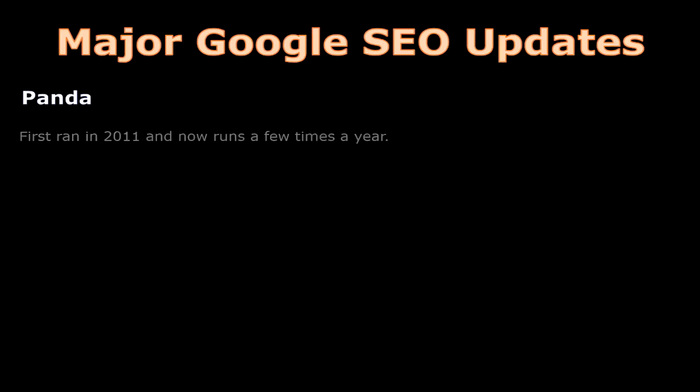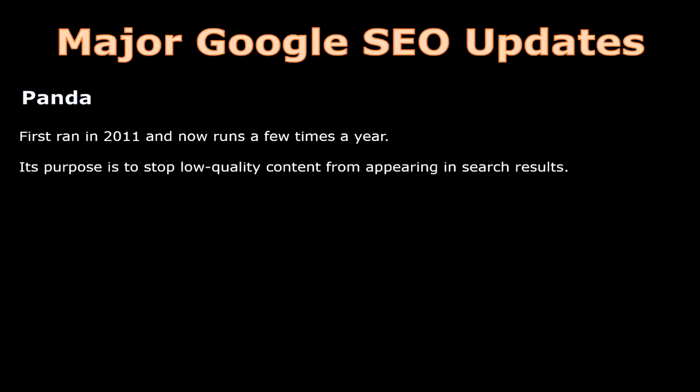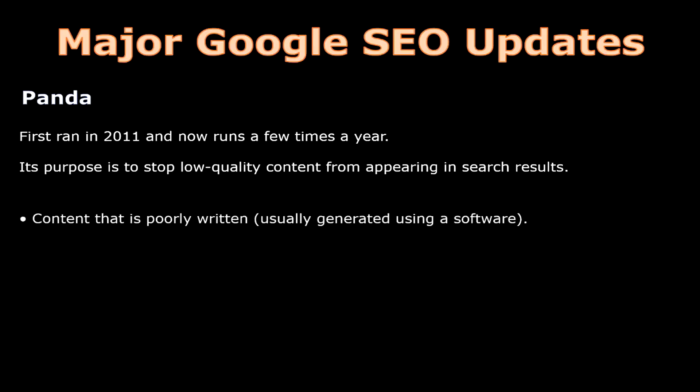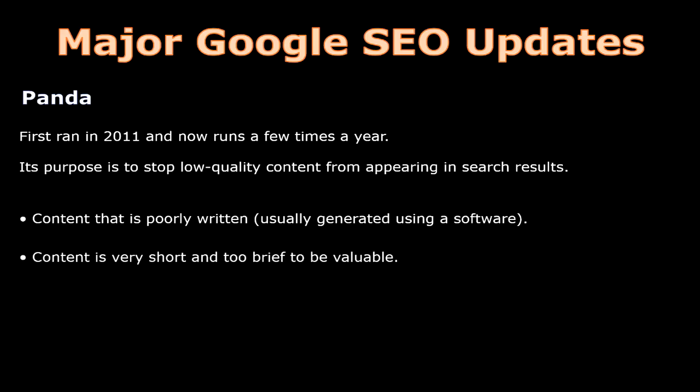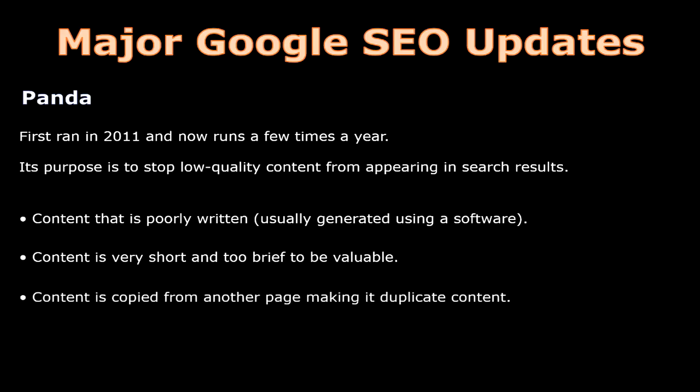They want users to search Google and find exactly what they're looking for without having to look anywhere else. The first major update was called Panda. Panda first ran in 2011 and now runs a few times a year. Its purpose is to stop low-quality content from appearing in search results. Low-quality content is content that is poorly written, usually generated using software, or content that is very short and too brief to be valuable.